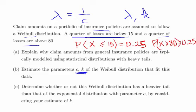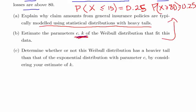Explain why claim amounts from general insurance policies are typically modelled using statistical distributions with heavy tails. Estimate C and K for this particular example with 15 and 80 as our quartiles. And determine whether or not this Weibull distribution has a heavier tail compared to the exponential distribution with parameter C by considering your estimate of K.